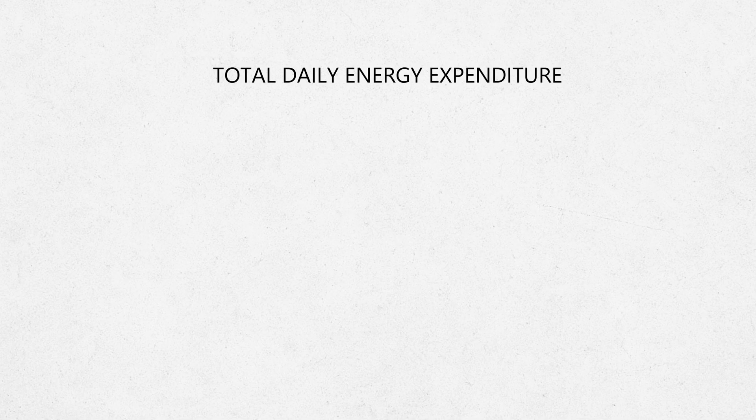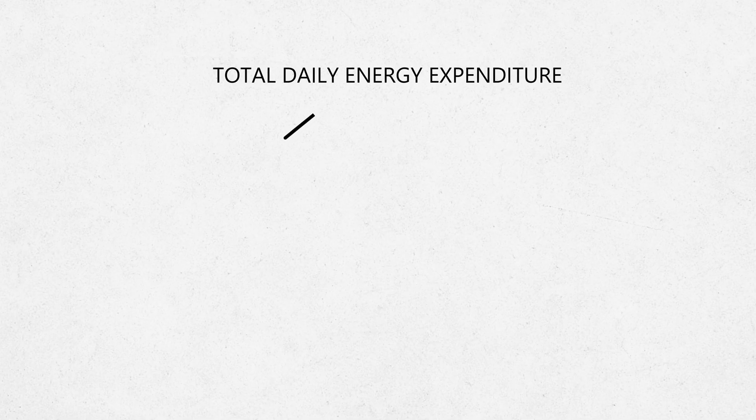The first thing you have is your total daily energy expenditure, or TDEE. This is the total amount of energy you expend throughout the day — the exact same thing as your metabolism. This is then broken down into two different subcomponents. The first is your resting energy expenditure, or REE. This is the amount of energy you expend while being at rest, representing all of the energy you expend while not being active.